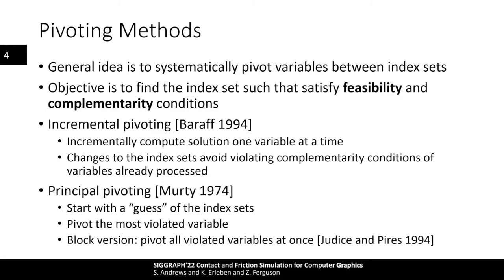In graphics, Barath introduced an incremental pivoting algorithm that solves for one variable at a time and pivots variables between index sets as required. An important characteristic is that any previously processed variable will never violate its complementarity condition, since it will be pivoted if it does. The method can solve an n-variable problem in n steps, even though each step may be computationally costly. Earlier principle pivoting methods start with an estimate of the index set for all variables, then pivot variables one at a time according to how badly they violate the feasibility or complementarity conditions — the method developed by Murty falls into this class. A block pivoting version was later developed to pivot multiple variables simultaneously.